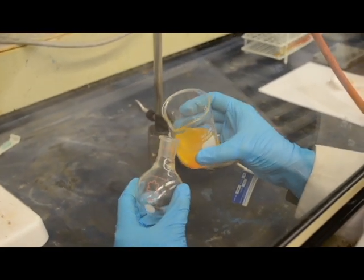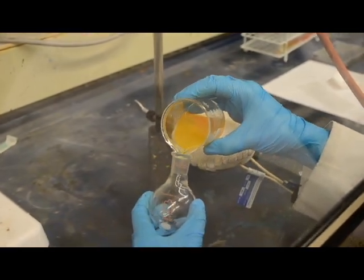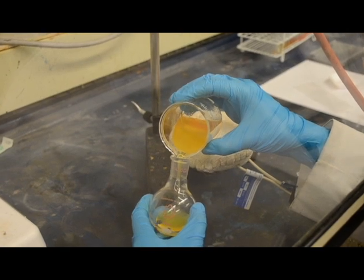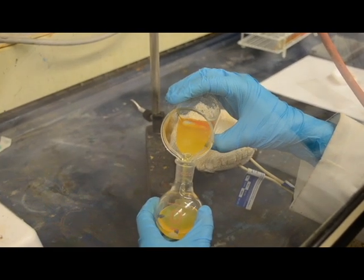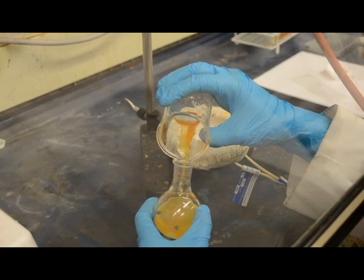After two hours of stirring, sodium hydroxide is added to create a basic solution. The mixture is then poured into the round bottom flask in order to begin refluxing for one hour.